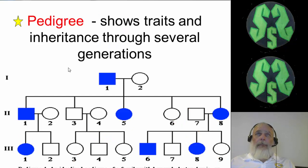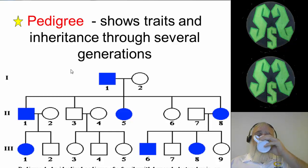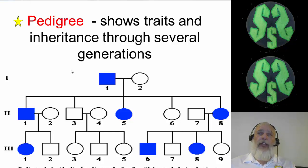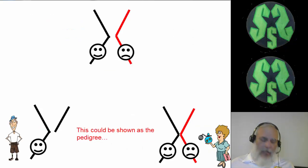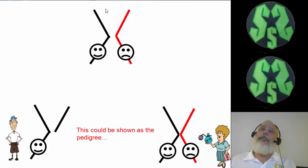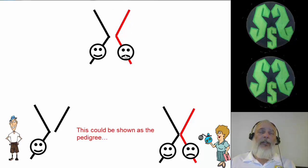And that brings us to something called a pedigree. A pedigree shows traits and inheritances through several generations — you may have heard of pedigrees through dogs or cats. Here is that dad who is not colorblind and that mom who is a colorblind carrier. They have a girl who has one non-colorblind and one colorblind allele — so she is a non-colorblind girl, but she is a carrier, meaning she has that gene and can pass it on to a child.